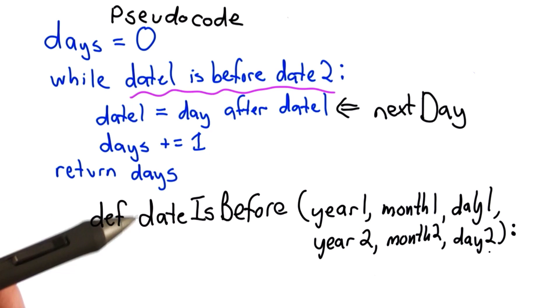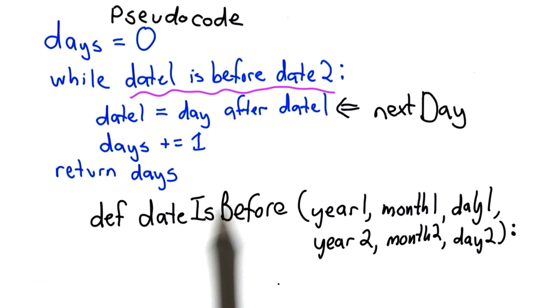If you weren't able to write the code for days between dates on your own, now that you've heard this hint, please try again. See if you can do it. Writing date is before first and testing that that's correct before you go on to writing the days between dates procedure. I'll show you my code next.